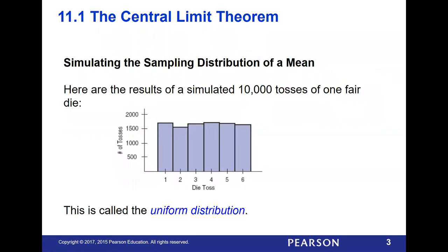If we were to take 10,000 tosses of one die — a single die from a pair of dice — we would get roughly a similar percentage across all of the throws, not exactly the same, but roughly the same. It would be flat like this, which is a uniform distribution. There's no hump, there's no skew — it's pretty level.